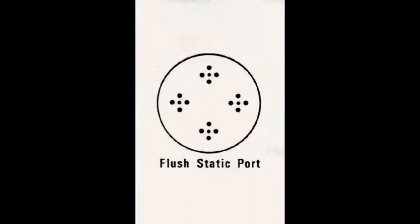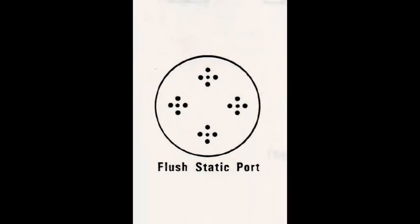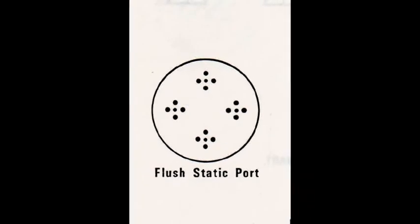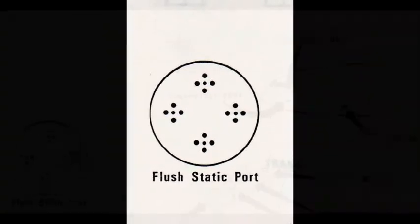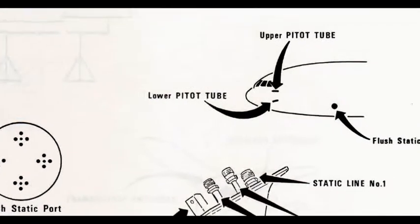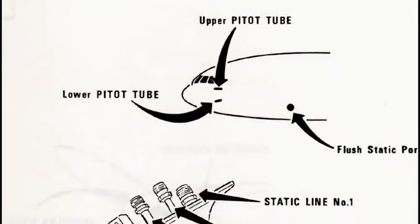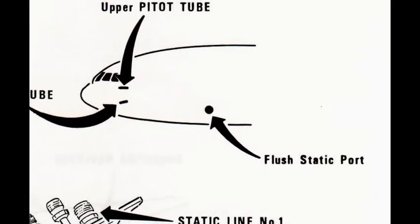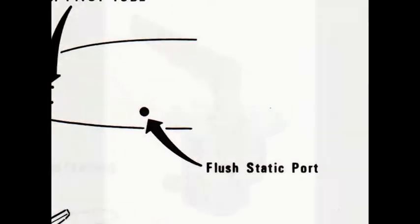A flush, skin-mounted static port is located on each side of the airplane. The ports are tied together to compensate for aircraft yaw and roll. Correction factors to the static pressure will also be included for the pitch of the aircraft.